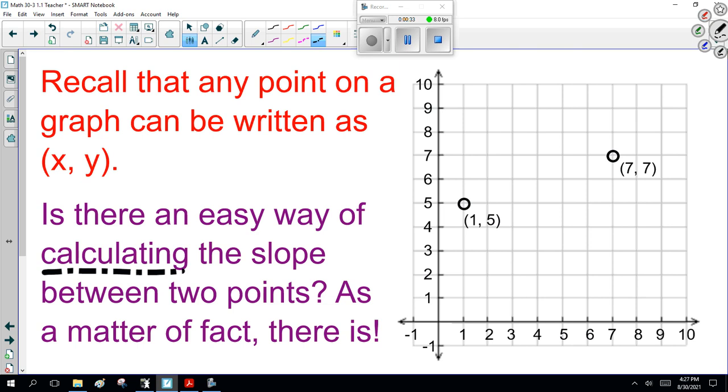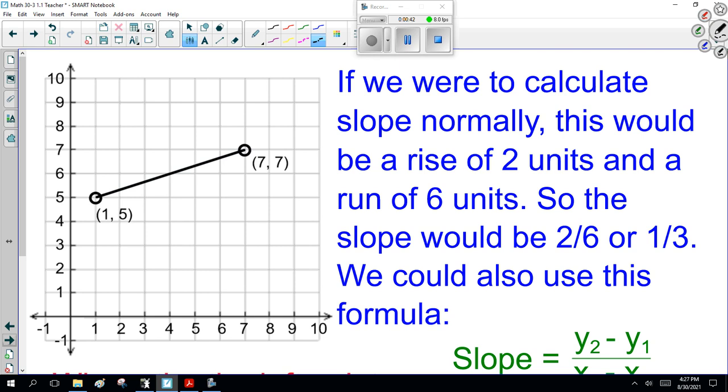If I give you two points like this, (1, 5) and (7, 7), once again, it's always the x value first. If we were to calculate slope normally, this would be a rise of 2 units and a run of 6 units.